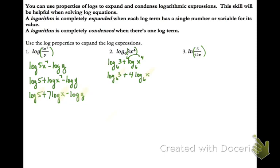For number 3, repeat the process. Look at the value — dividing affects all terms, so expand division as subtraction, a difference. The first expression, ln 5, is done. The second one involves multiplication, so we expand that using addition. Notice we open a parenthesis and write natural log of 12 plus natural log of x, then distribute the negative. Those values are now single numbers or variables, so they are completely expanded.